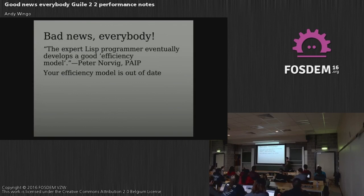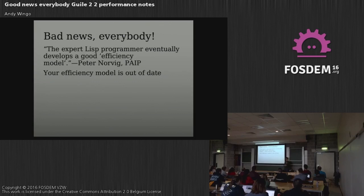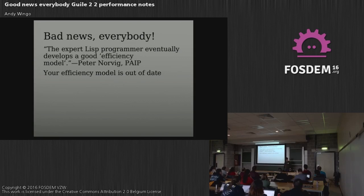But the bad news is that if you're interested in getting the best performance you can possibly get, your mental model about how you understand how your code works — like what code it is translated into and what are the costs in different parts of your program — that model is now out of date. Peter Norvig wrote a book called Paradigms of Artificial Intelligence Programming, and one of his points that has stuck with me is that the expert Lisp programmer eventually develops a good efficiency model, a model of what their code is doing. And we need to update ours.